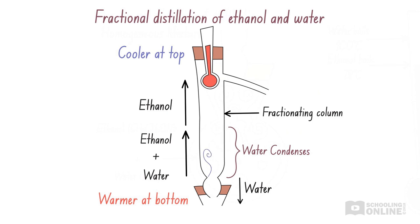This is where fractional distillation takes over. At the bottom of the fractionating column, it is hot enough for both water and ethanol to exist as gases. However, it is cooler at the top, so water vapour turns back into liquid water. Meanwhile, ethanol has a lower boiling point than water, so it remains as a gas. Therefore, the fractionating column allows us to separate substances with similar boiling points.